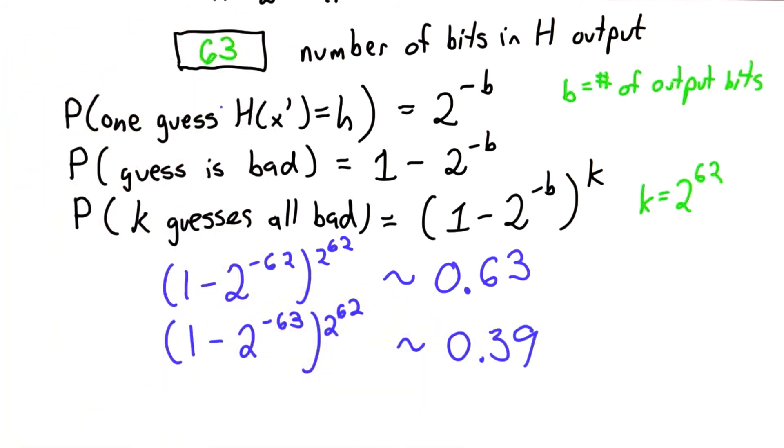That means 63 is the fewest number of bits to provide the attacker with less than a 50% chance of finding a preimage that maps to the same hash value in 2 to the 62 guesses.